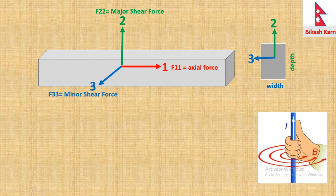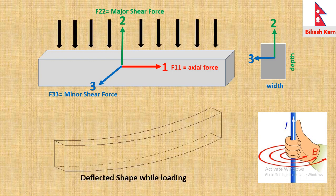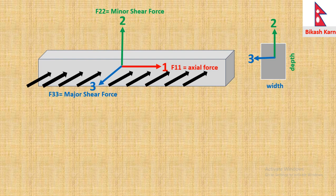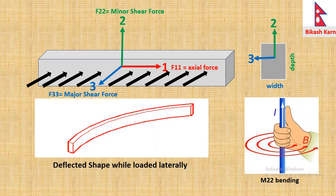For bending we will use right hand thumb rule. Our thumb will point along an axis and the direction of curl fingers will give direction of bending. For gravity load, the beam will deflect as shown. Let's point our right thumb along 3, then curl of finger will give direction of bending or bending in direction of depth. This is also called M33 moment. Similarly, when load is in lateral direction there will be bending in plan view and is called M22 moment.